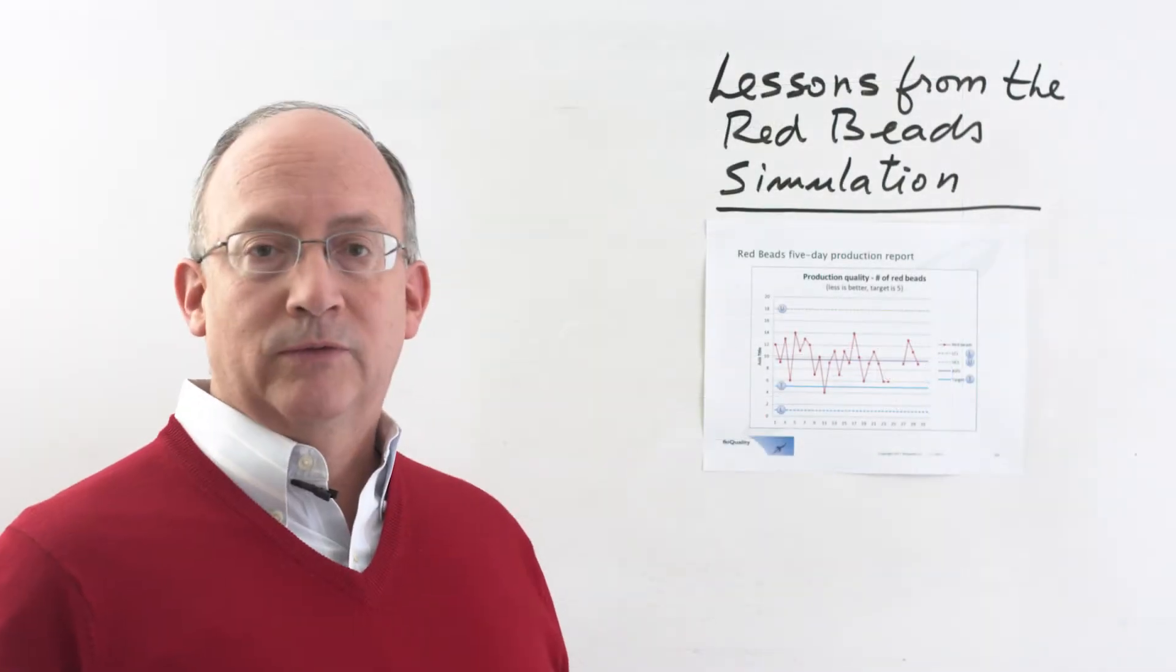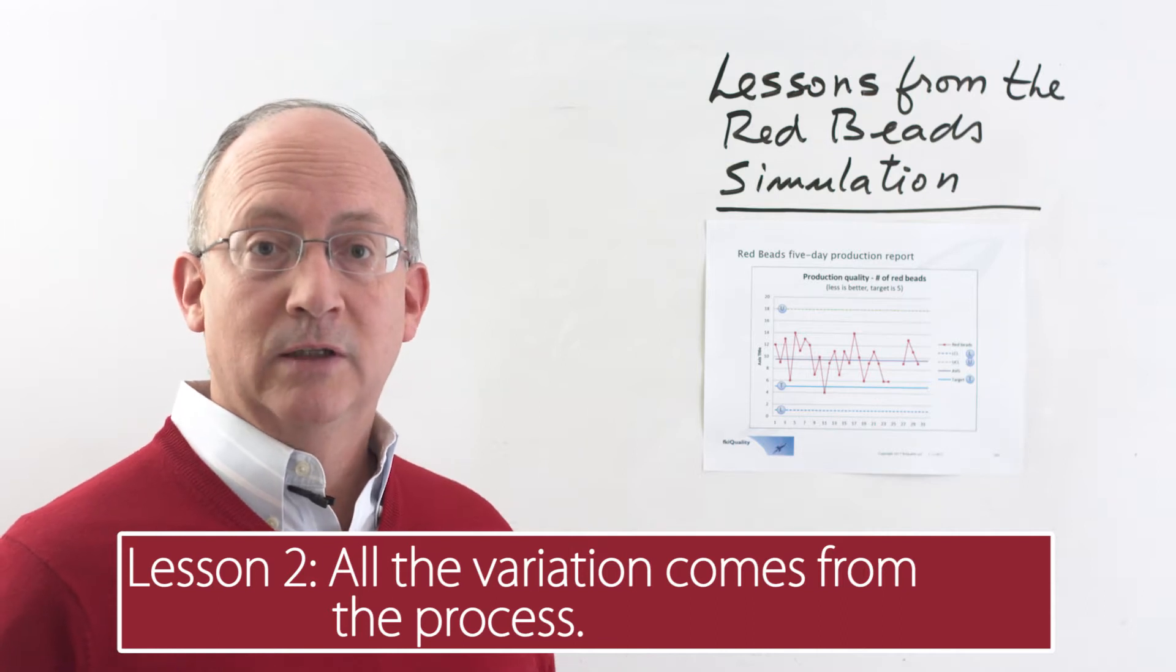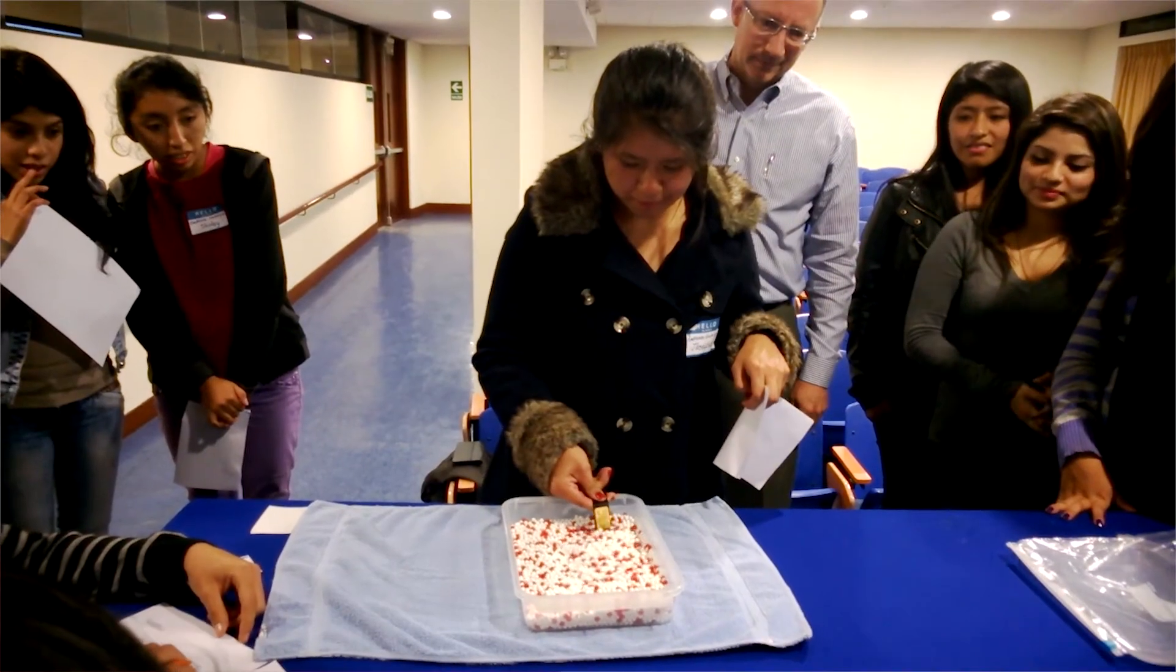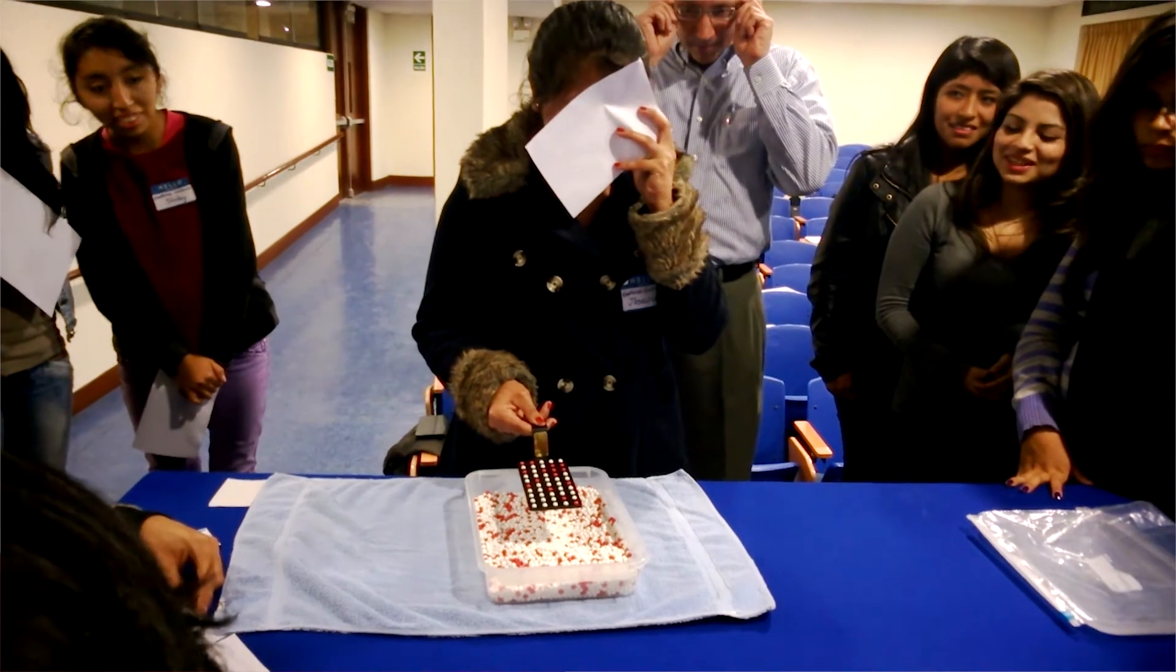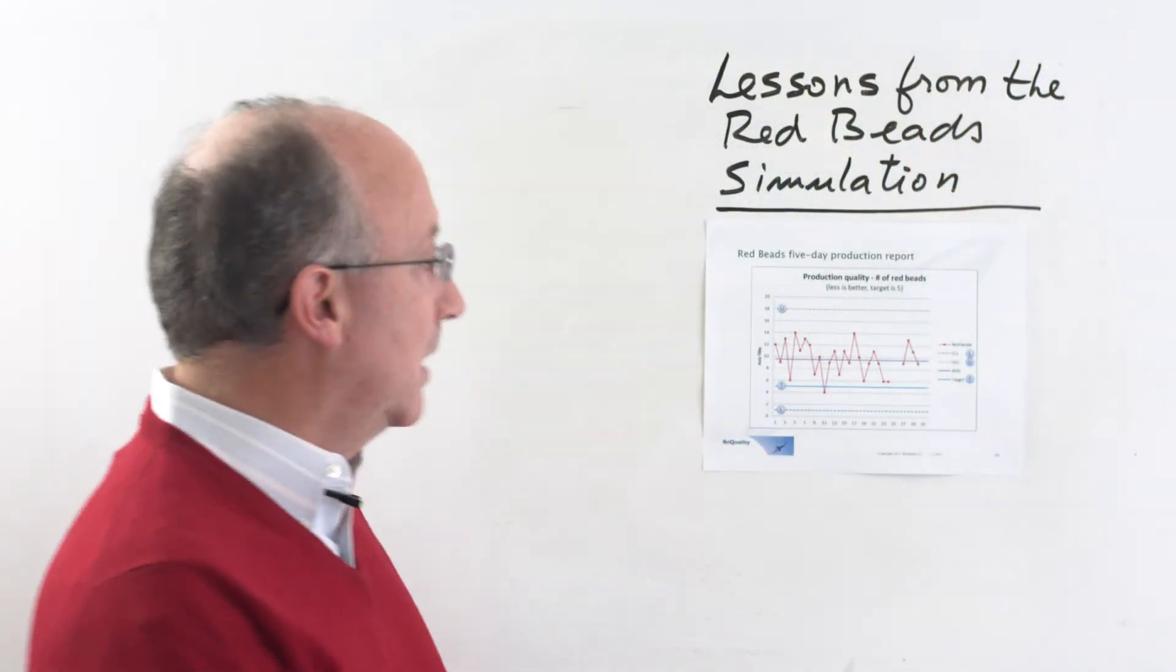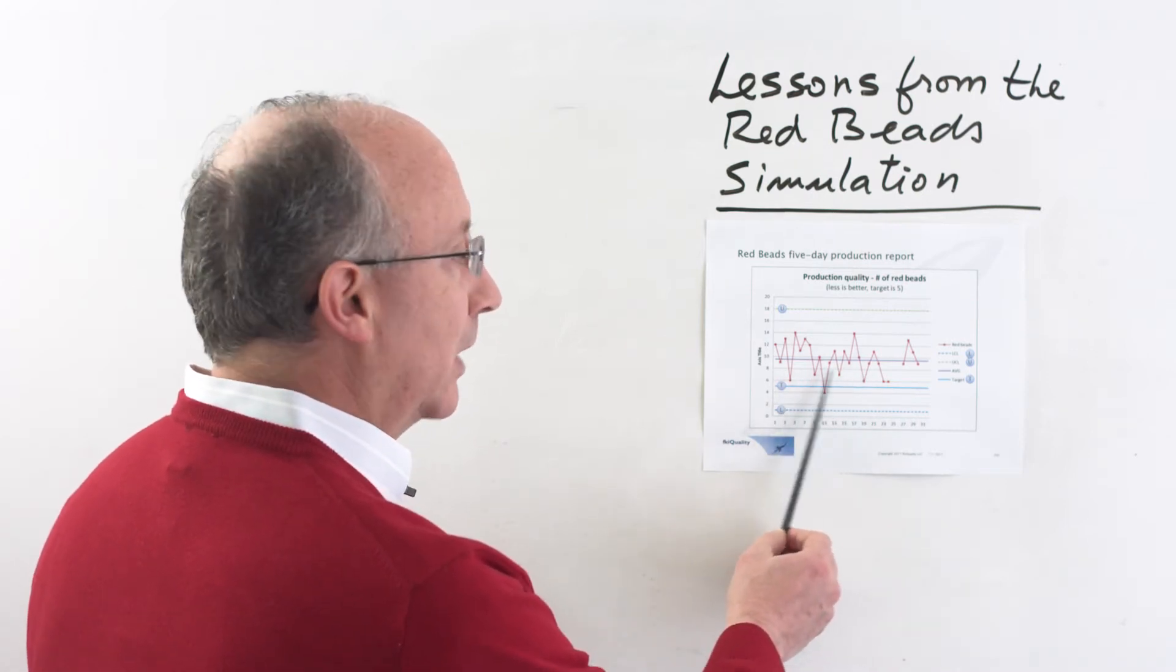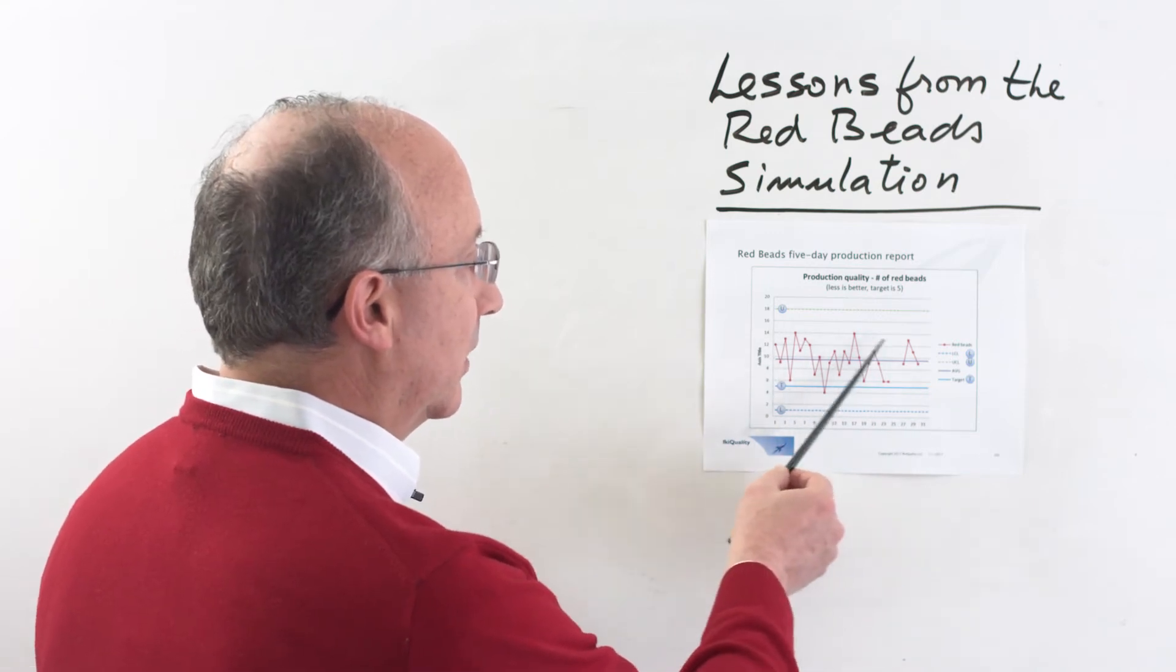Now, the second lesson from here, having already understood that this is a stable system for the reasons that I just indicated, is that all variation came from the process and not from the workers. This has important managerial implications, because what it means is that there was no merit in somebody who got a smaller number of Red Beats. It's not like they were actually doing anything better than the ones that got higher numbers than the average.